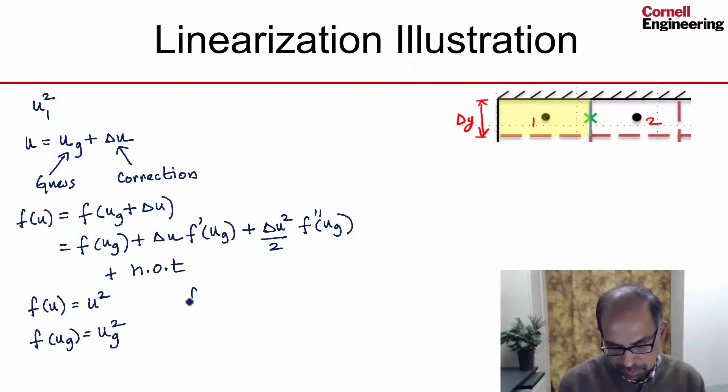f prime of u is the derivative of u squared, so that's 2u. And f prime of u evaluated using the guess is just 2u guess.